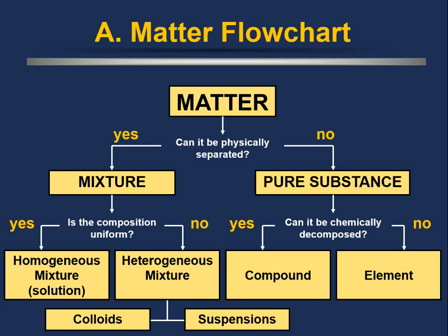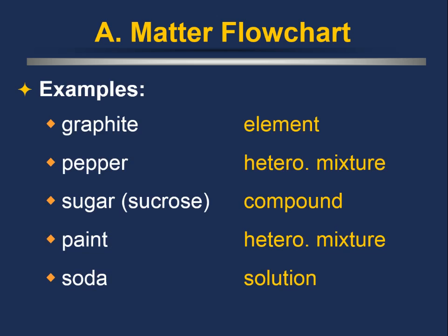For a pure substance, ask: can it be chemically decomposed? Water can be decomposed into its constituents — hydrogen and oxygen — making water a compound. However, if you take something like hydrogen gas, graphite, or diamond, you cannot chemically decompose those — they're pure elements. Graphite is just carbon; that's all it is.